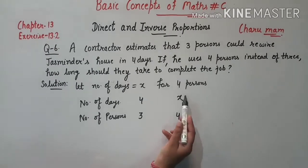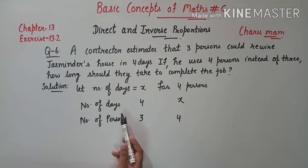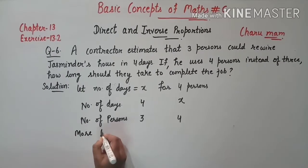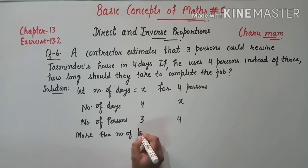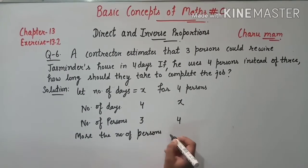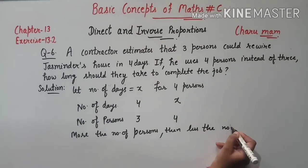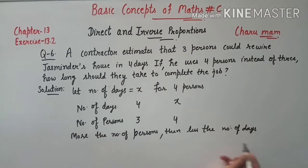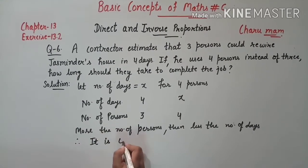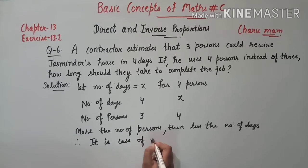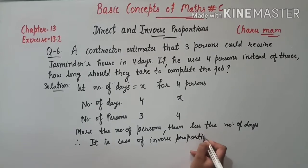अगर number of days 4 हैं तो persons 3 हैं, लेकिन अगर हम persons increase कर दें तो days कम हो जाएंगे — क्योंकि ज्यादा persons होंगे तो उसी काम को complete करने में कम days लगेंगे। More the number of persons, less the number of days. Therefore, it is a case of inverse proportion.